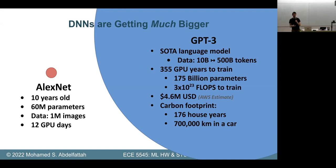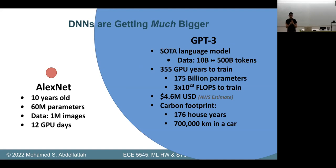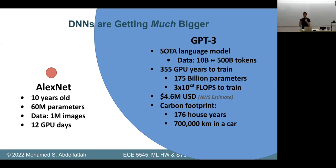We haven't hit trillion parameters yet — I think Microsoft was working on something that big. GPT-3 is so well-known and effective because it's a general language model trained on all the text of the internet using next-word prediction. Then for any downstream language task — next-word prediction, code synthesis, question answering — you can train those easily given this huge embedding model.